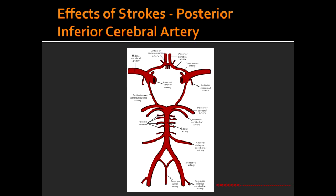Define dysmetria. Dysmetria is the inability to confine muscle action to desired movement, and this is due to faulty judgment of distance. What is a mnemonic to help you remember some of the symptoms of posterior inferior cerebral artery stroke? The mnemonic is: don't pick a horse that can't eat. This will help you remember hoarseness and dysphagia.